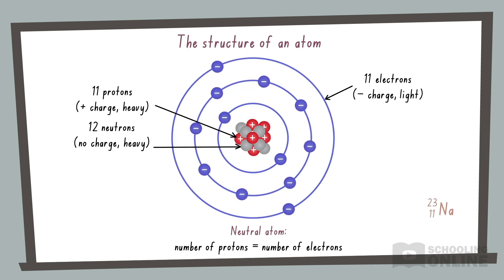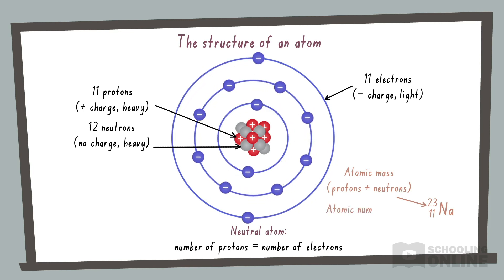We can also represent atoms using chemical symbols. The atomic mass is found by adding the number of protons and neutrons, while the atomic number matches the number of protons.